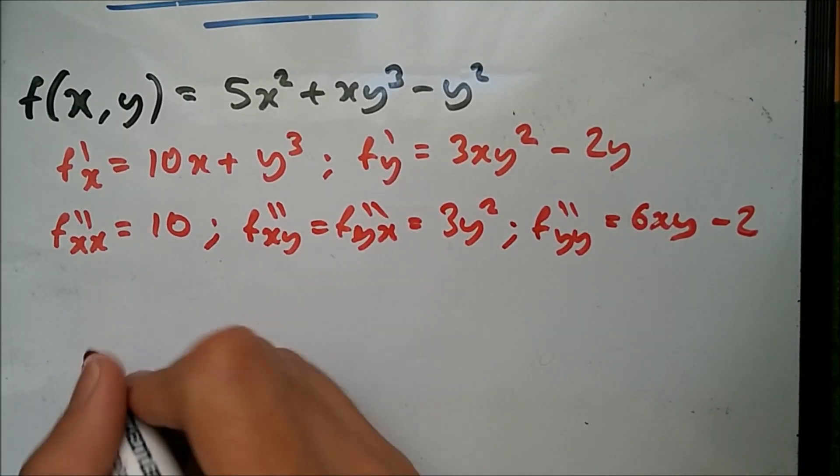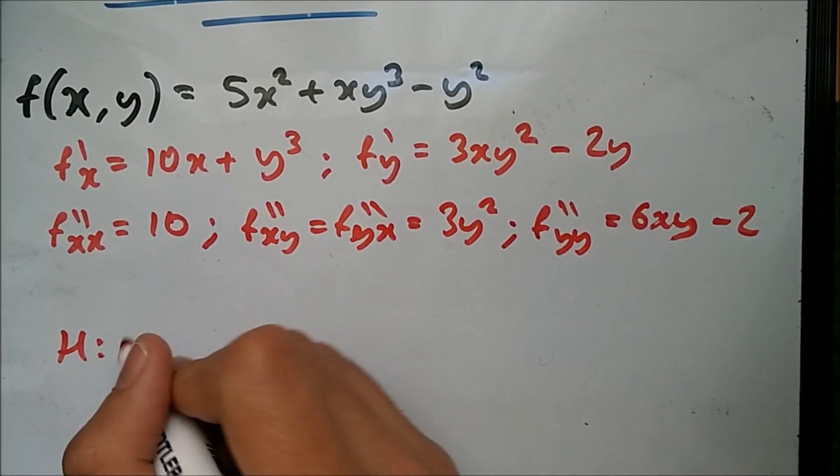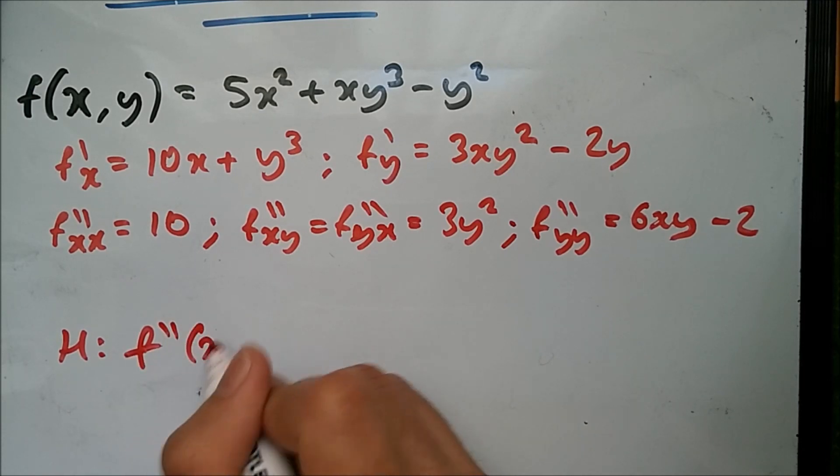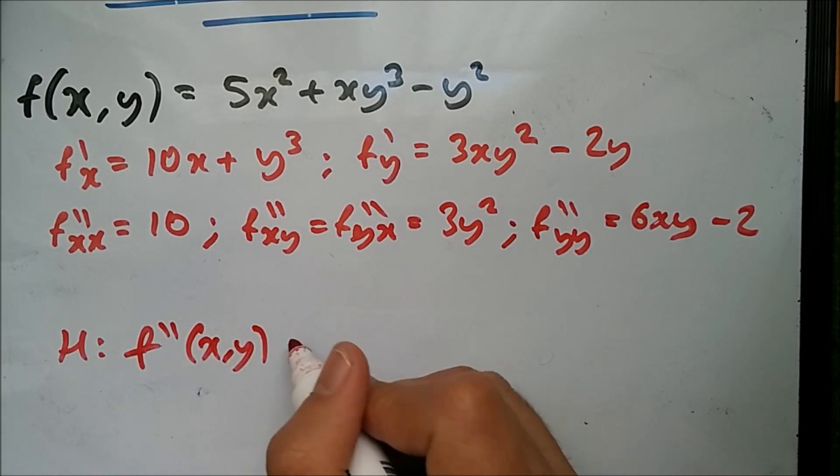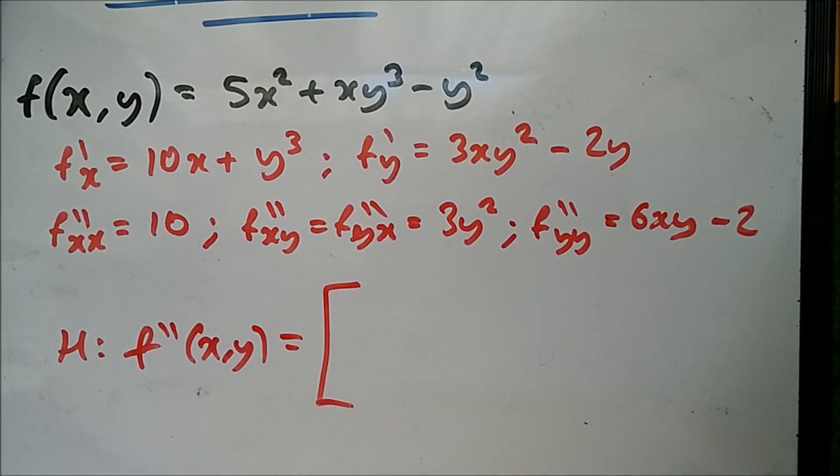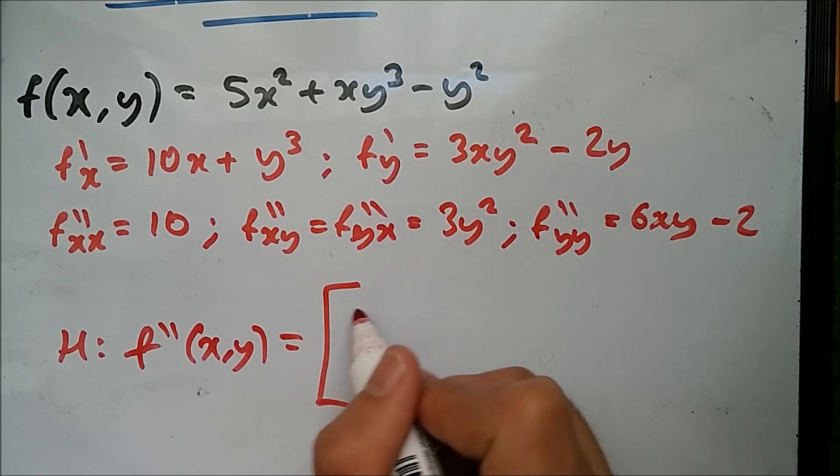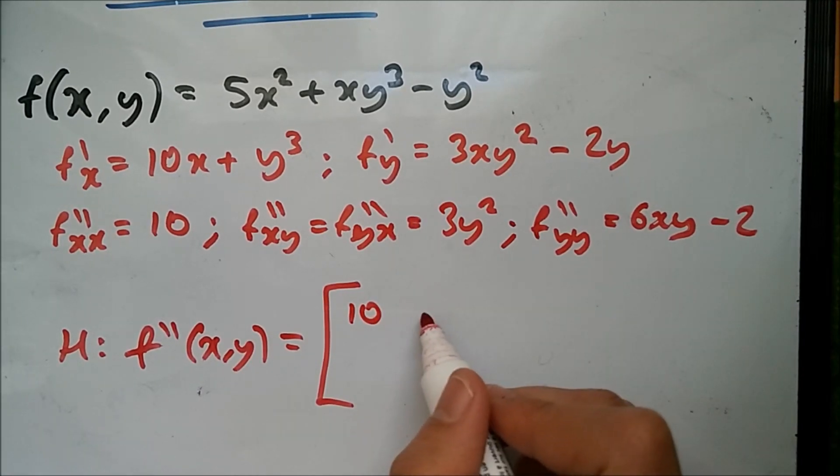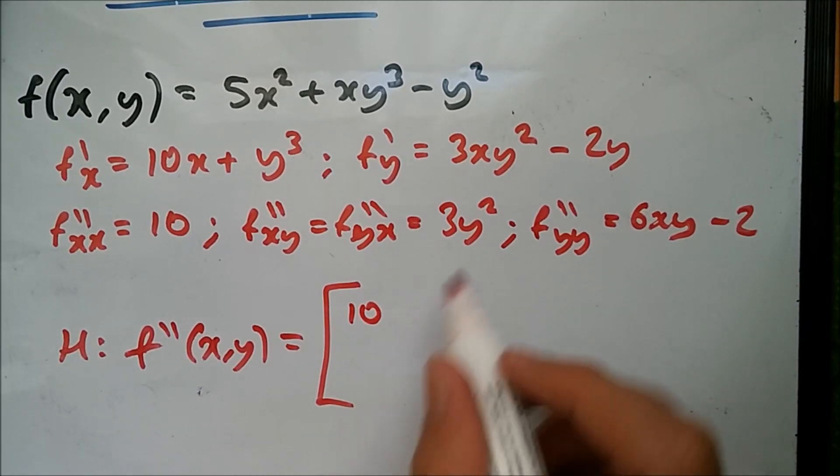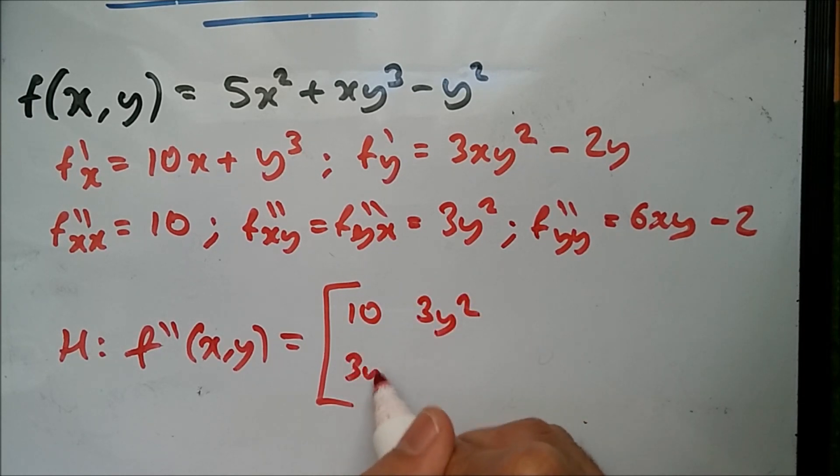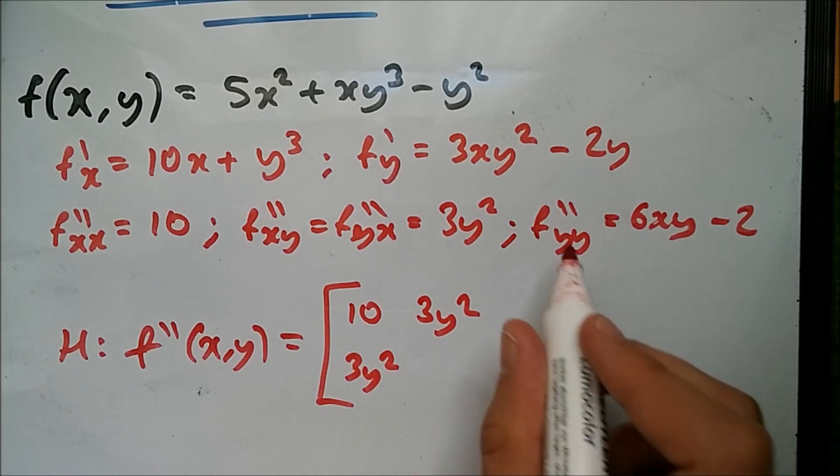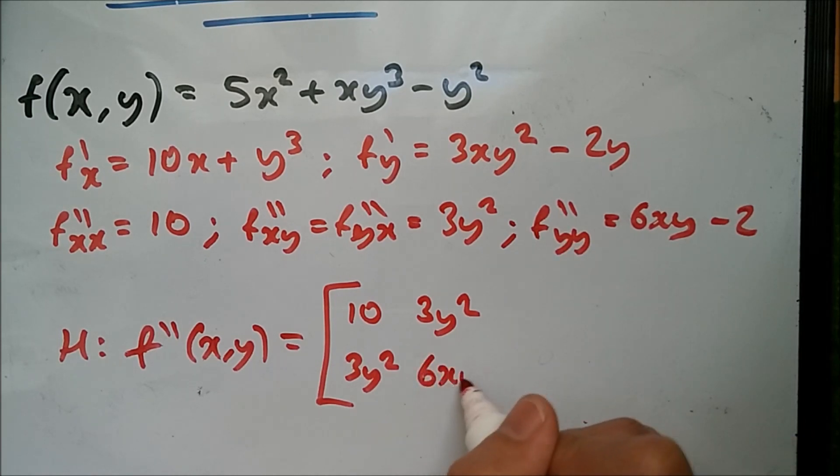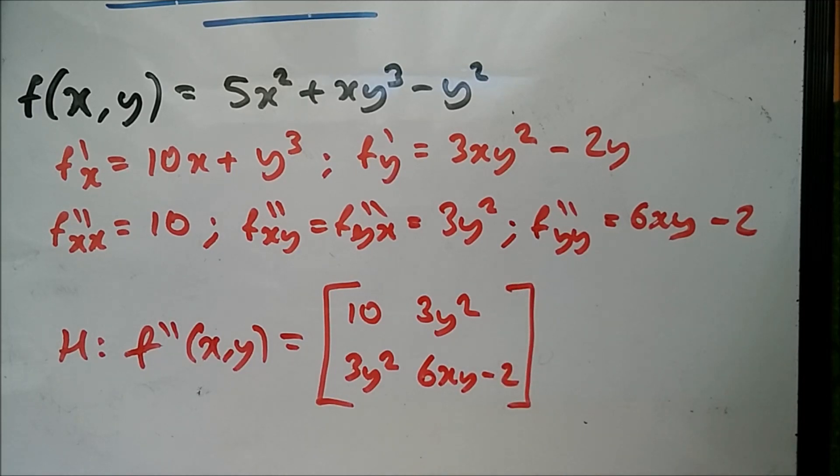All you have to do now is substitute this into the Hessian matrix, which we call f''(x,y). It's a 2×2 matrix. The first position is f''xx = 10, then fxy = 3y², fyx = 3y², and the last term is fyy = 6xy - 2. That's it.